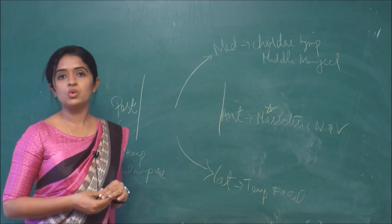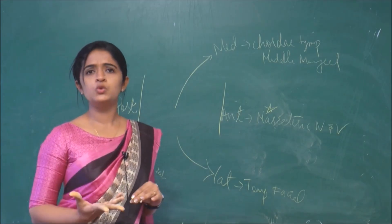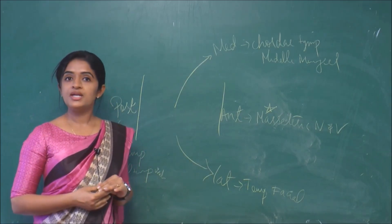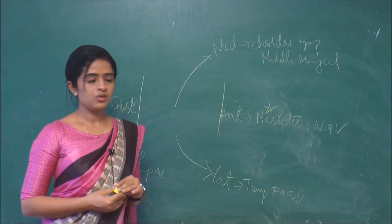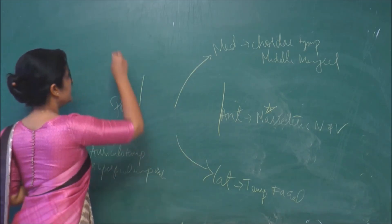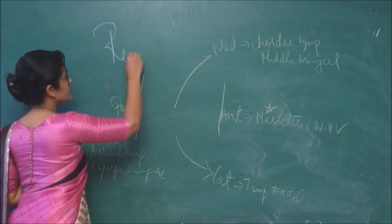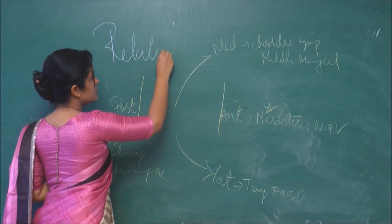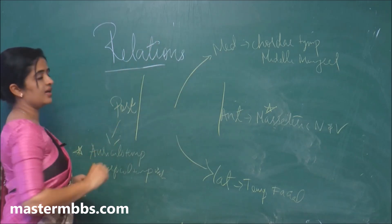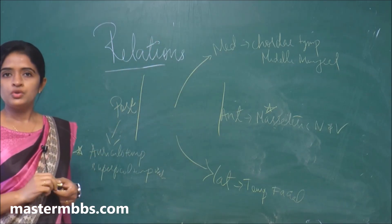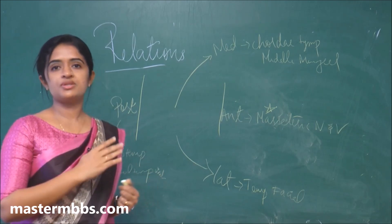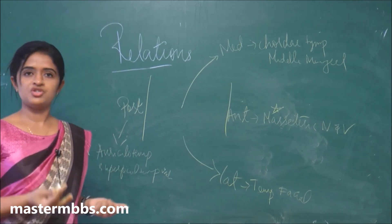The next thing we should know is that whenever we do surgeries at the temporomandibular joint, we should be more cautious about its relations. To put the relations in a nutshell, it is not easy to study all the relations, but whenever you study relations of any structure, just make it a point that you know at least two or three relations with respect to each side of the organ or joint.